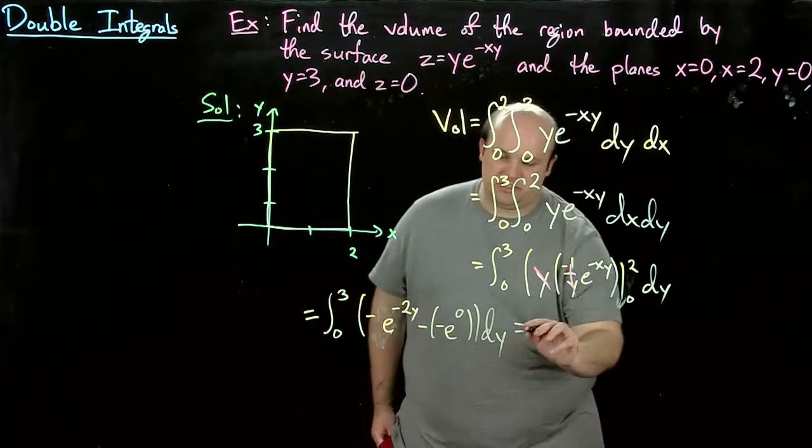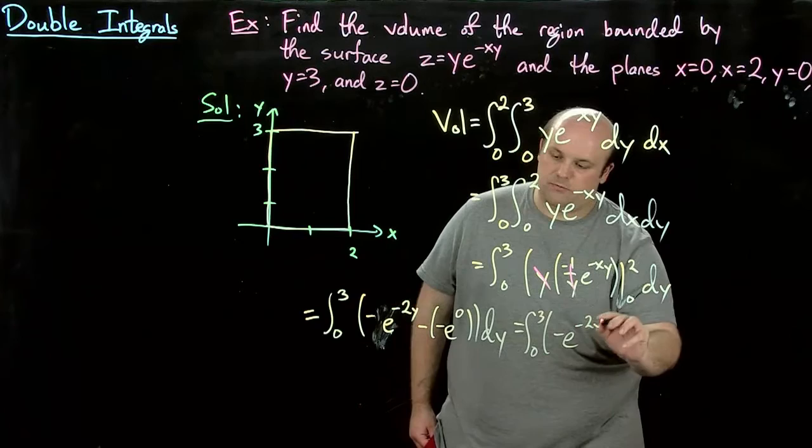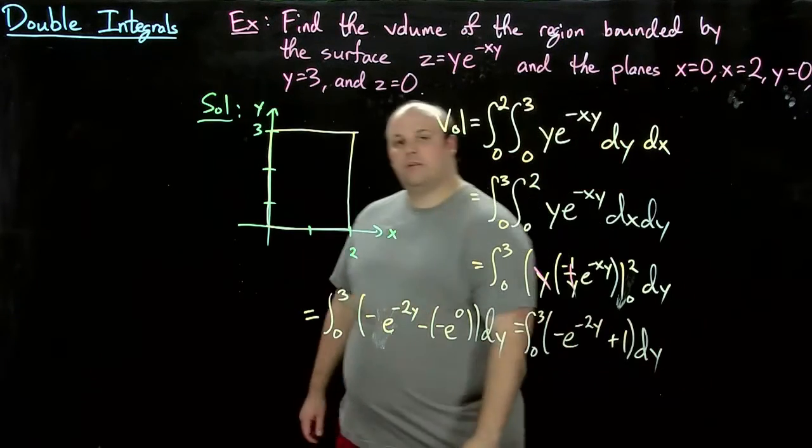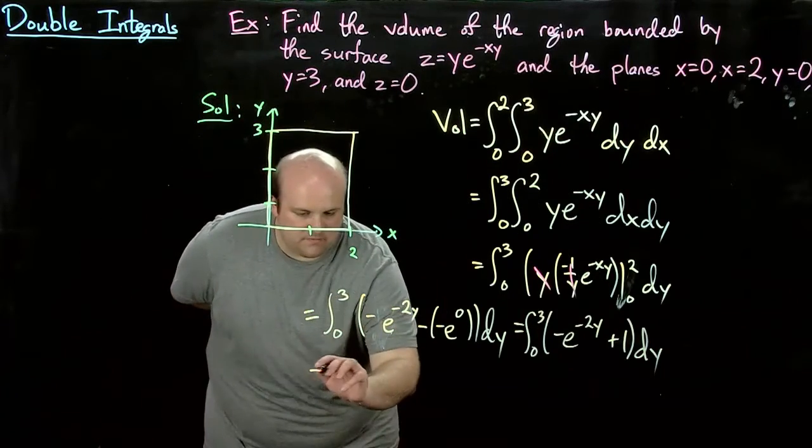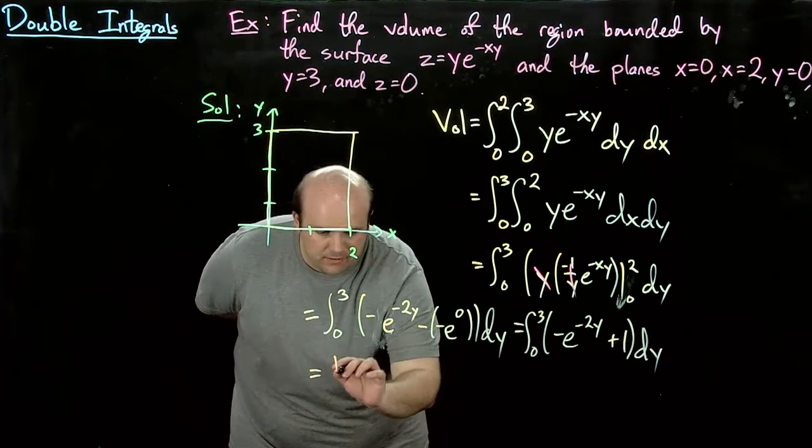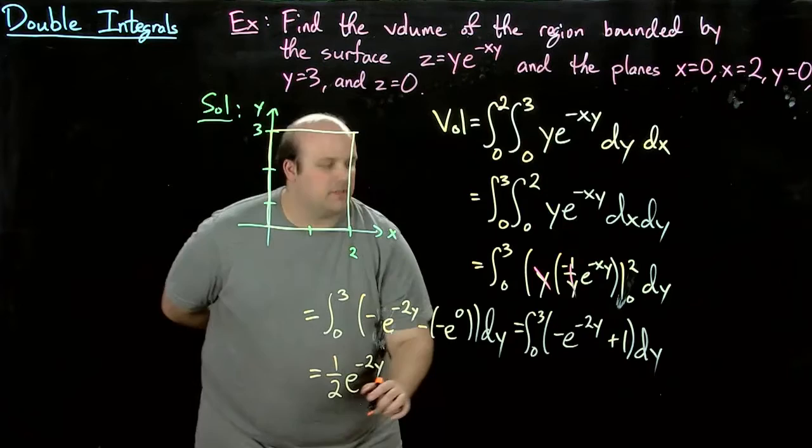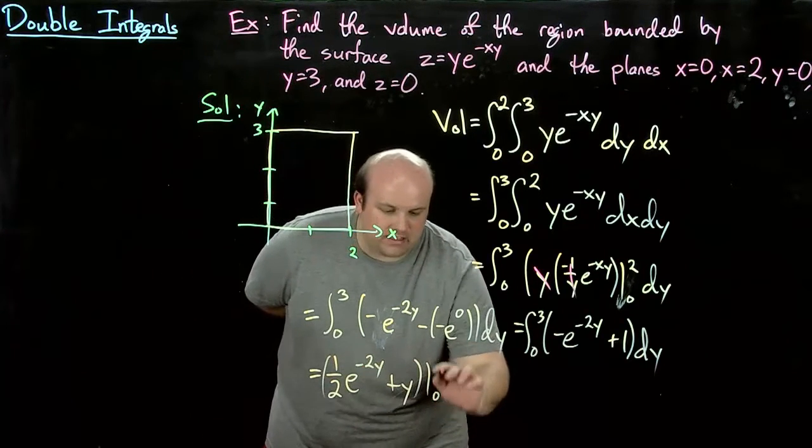And that is just, of course, negative e to the minus 2y plus 1. And now we integrate that. That is just integrate this, and you get 1 half e to the minus 2y plus y, and then we evaluate that from 0 to 3.